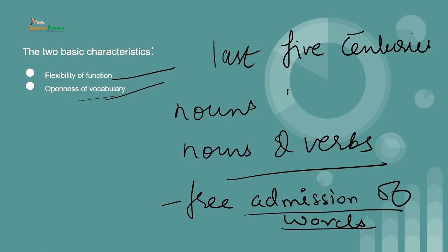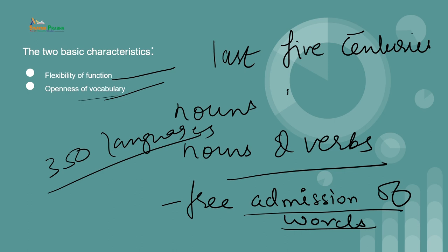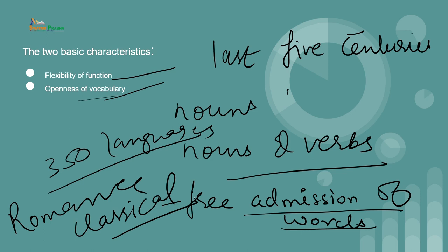Openness of vocabulary implies the free admission of words from other languages and the ready creation of compounds and derivatives. Words from more than 350 languages have entered English this way — from French, Spanish, Russian, Latin, Greek, Hindi, and Persian. English frequently forms scientific terms from classical Greek word elements, and although a Germanic language in its sounds and grammar, the bulk of English vocabulary is in fact Romance or classical in origin.